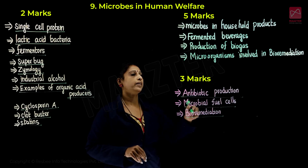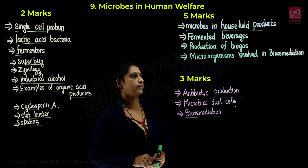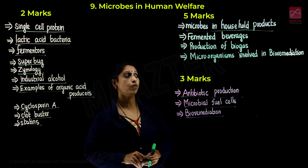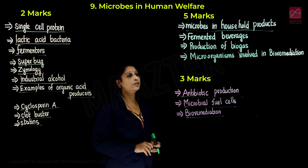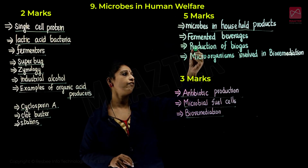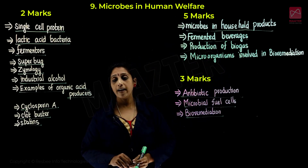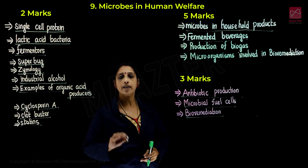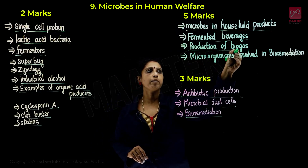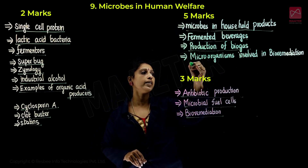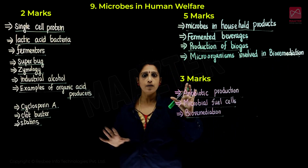Five more questions include microbes in household products — yogurt, cheese, paneer, etc. Then fermented beverages — beer, wine, rum, whiskey, etc. All these notes will be studied. Then production of biogas, which is an important five-mark question, and microorganisms involved in bioremediation.